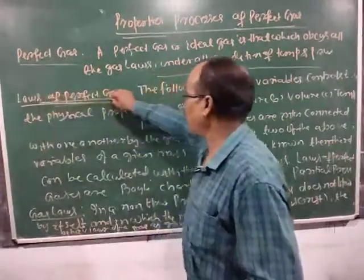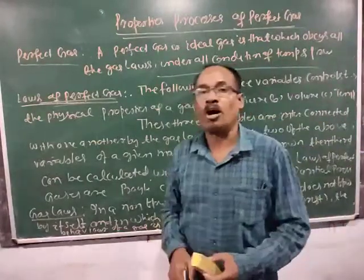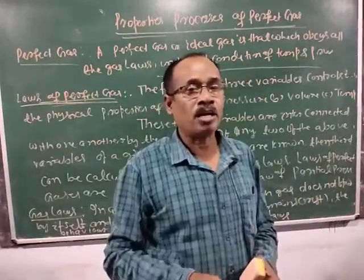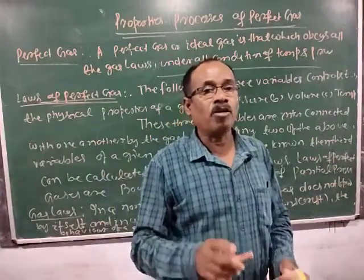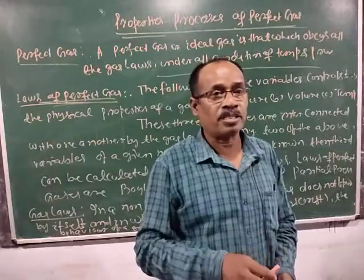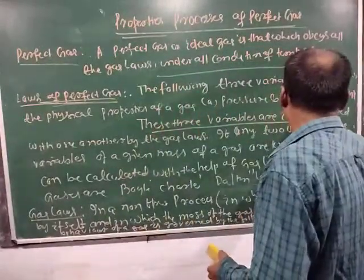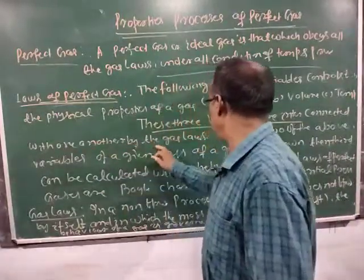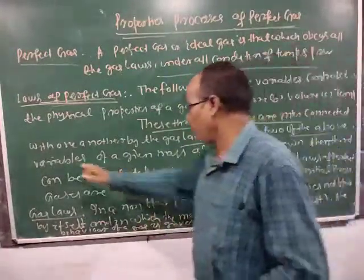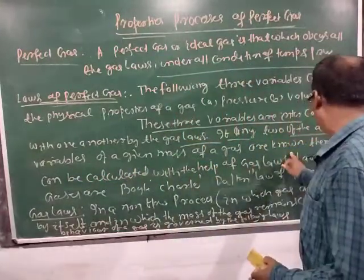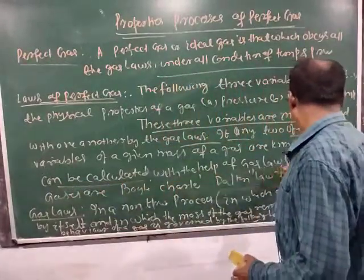The laws of perfect gas: the following three variables control the physical properties of a gas — that is P, the pressure of the gas; V, the volume occupied by the gas; and T, the temperature of the gas. These three variables are interconnected with one another by the gas laws. If any two of the above variables of a given mass of a gas are known, then the third can be calculated with the help of gas laws.